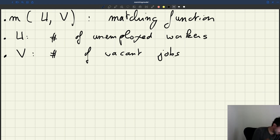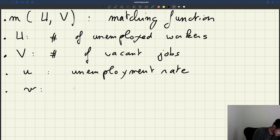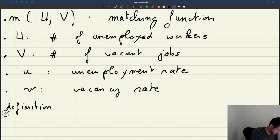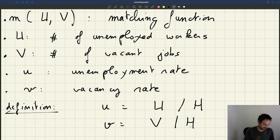Then in contrast, when I use the letter small u, that's going to be our unemployment rate. And when I use the letter small v, that's going to be the vacancy rate. And how are these rates defined? Well, that's a very important definition. So the unemployment rate is the number of unemployed divided by the size of the labor force. And the vacancy rate, we're going to define as the number of vacancies divided by the size of the labor force. So these are our definitions for these two rates. The unemployment rate here and the vacancy rate. Okay.